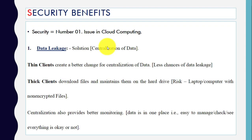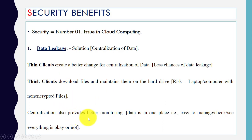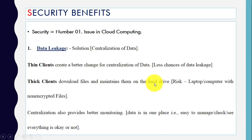Next is data leakage. The solution for data leakage is centralization of data. As discussed, thin clients create a better chance for centralization of data. Centralization also provides better monitoring — since data is in one place, it's easy to manage and check that everything is okay. In the case of thick clients, files and applications are downloaded to the machine's hard drive, creating risk. With thin clients, there is no hard drive, so data is centralized and there are no chances of data leakage.